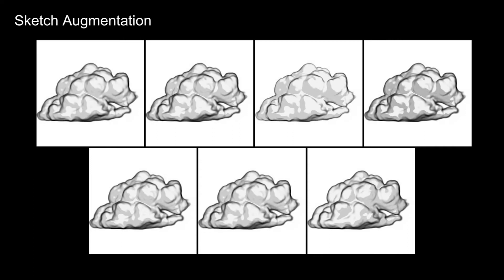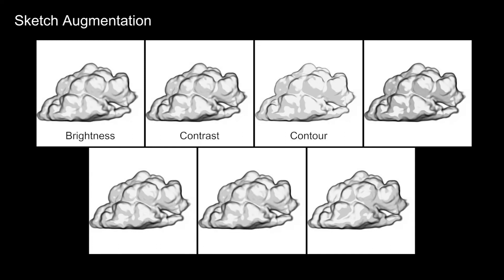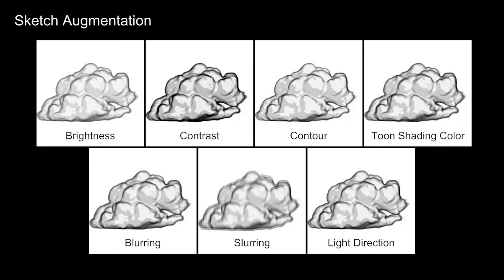we augmented the sketches used in training to cover different values for brightness, contrast, contour strength, tune shading color, blurring and slurring in X and Y direction as noise addition, and variations in light direction in X and Y.